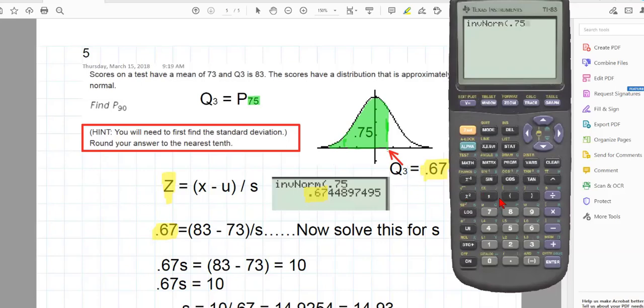In the TI-84, you would then follow this by the mean, and we're talking about the standard normal distribution. So the mean is 0, and the standard deviation is 1. And when I press enter, I get this number, 0.67 and change.